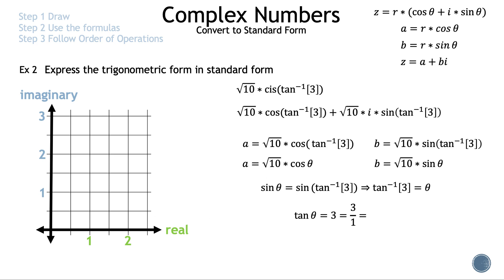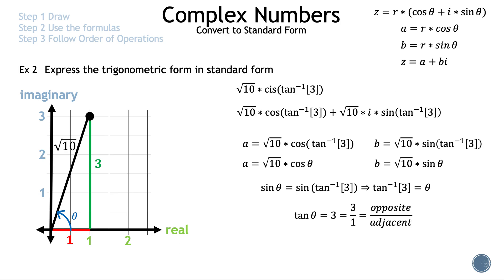We rewrote 3 as 3/1 so we can draw it on the graph. Using SOHCAHTOA, tangent = opposite/adjacent. We go 1 to the right and 3 up — there's our point, our θ, and our modulus, which is √10. Note: we could not switch the 1 and the 3, because θ starts from the x-axis to the modulus, so 3 must be the opposite side and 1 the adjacent. Using the Pythagorean theorem confirms r = √10.